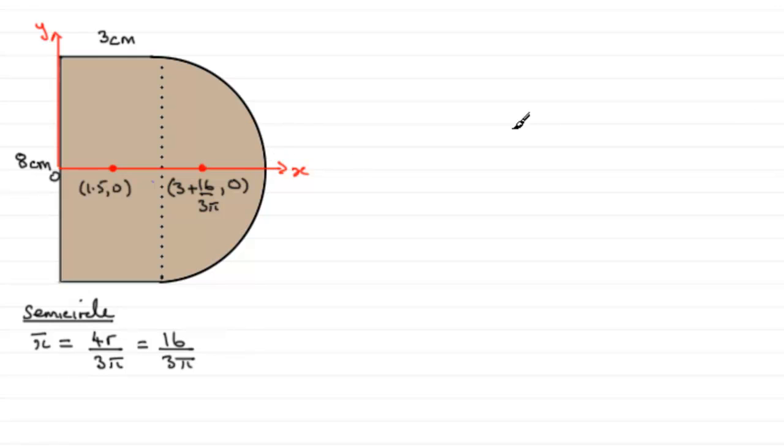Now we need to think about the masses of these two laminas. And it's going to be based on the area. If we say let the mass per unit area equals some constant m, then the mass for the rectangle would be the area 8 times 3, which is 24, multiplied by m. So that would be 24m units.